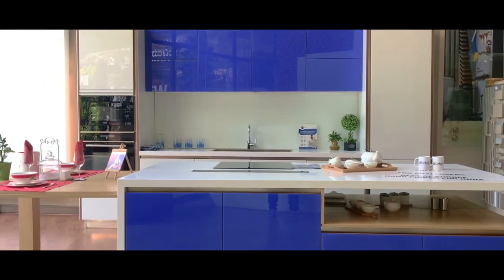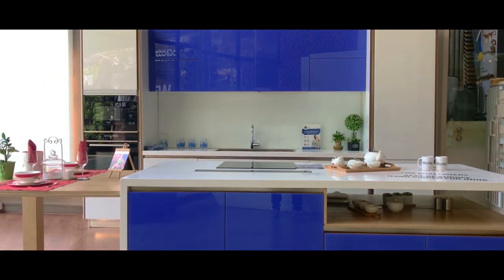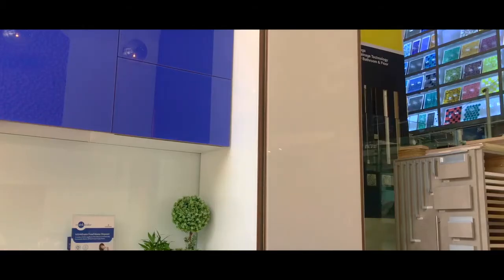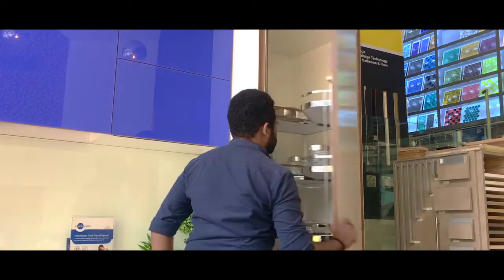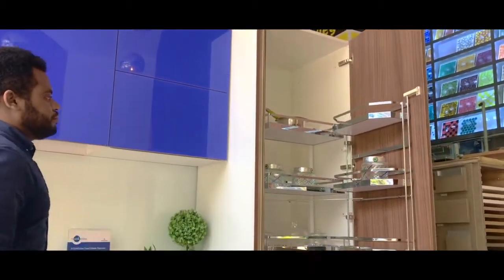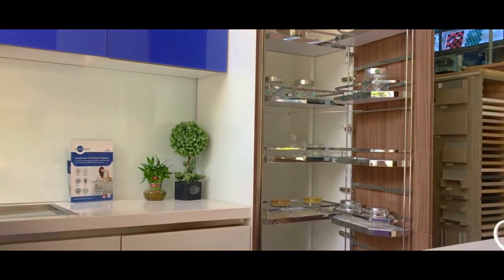The first kitchen you see as you walk in is an island kitchen with a blue and white lacquered glass. The tower unit on the right has a chrome finish pantry accessory which helps with ease of access into the cabinet.